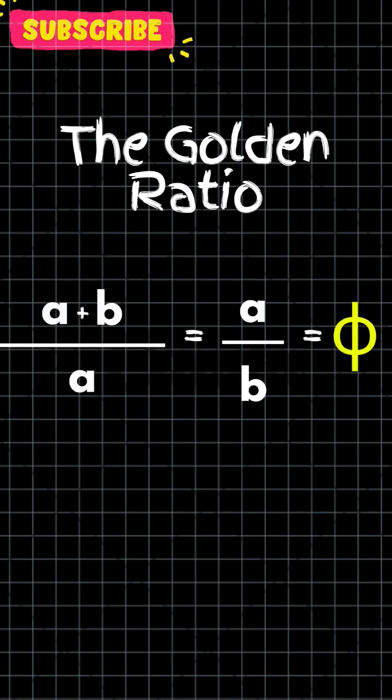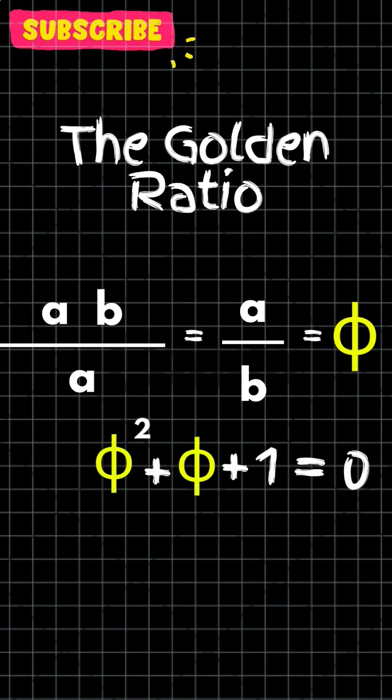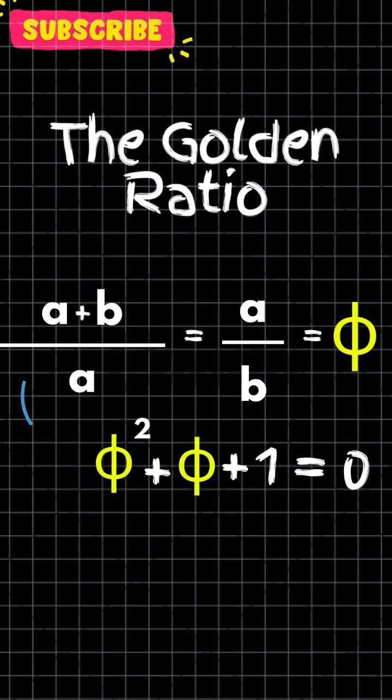This equation can be rearranged to give the equation phi squared plus phi plus one, which is equal to zero, whose positive solution is the golden ratio.